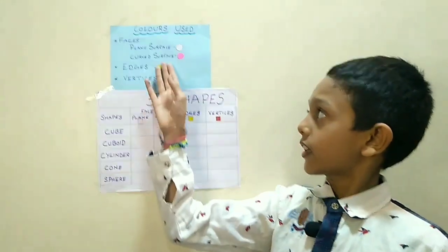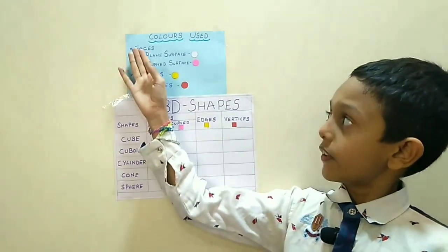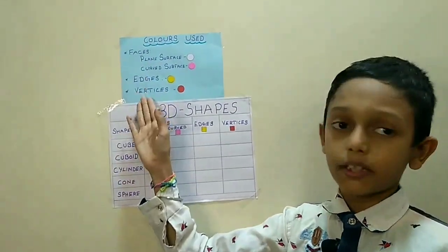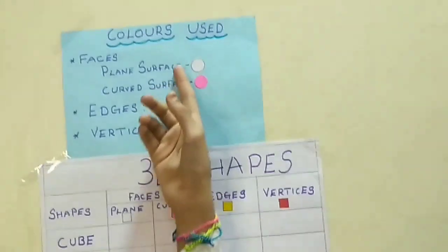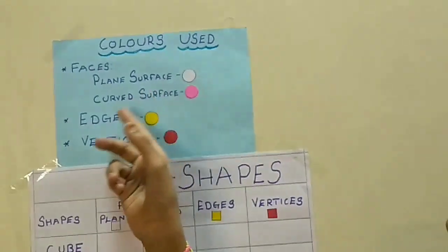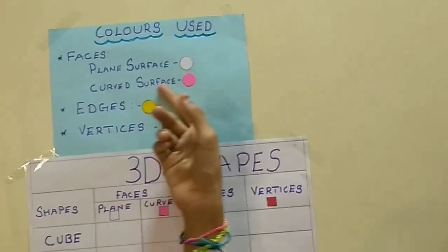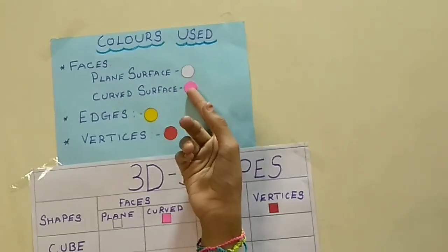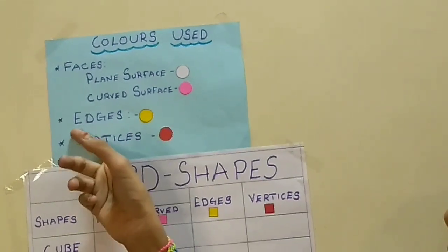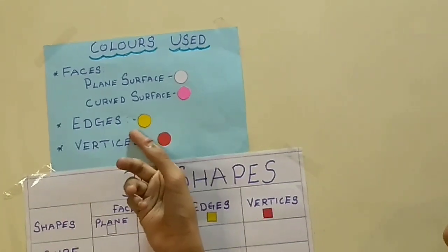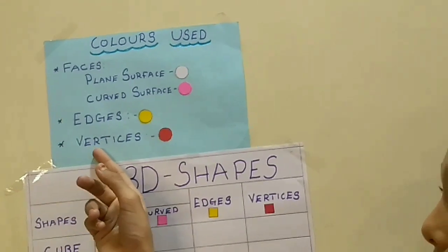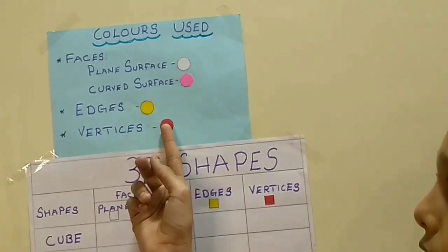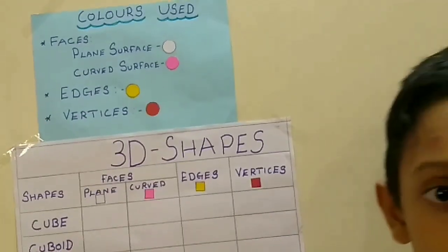I took different colors for faces, edges and vertices. For plain surface I took white color, for curved surface I took pink color, for edges I took yellow color and for vertices I took red color.